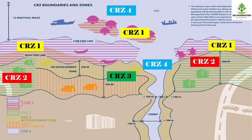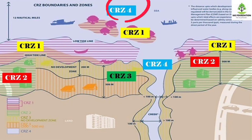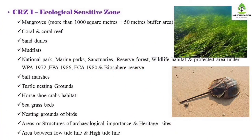CRZ2 areas are all these areas. We will mention these areas in the next slide. CRZ3 areas are all these. Next one is CRZ4 — the water body is the CRZ4 area. First, CRZ1 area: the High Tide Line and Low Tide Line are all CRZ1 areas.